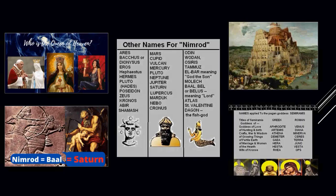We've done quite a few videos about the Queen of Heaven and Nimrod. Here are some of the names they go by: Nimrod goes by Shamash the sun god and Baal, Moloch. Ishtar goes by Venus and Diana. All their names way back to Babylon mean the same people.